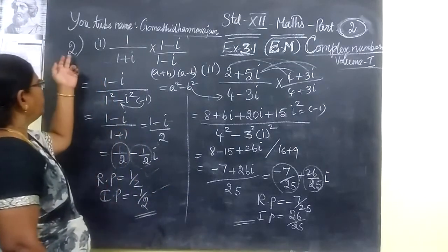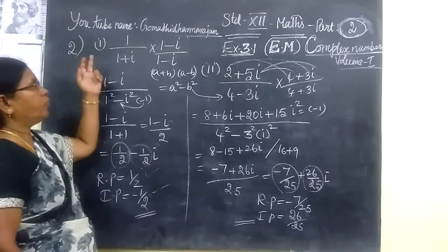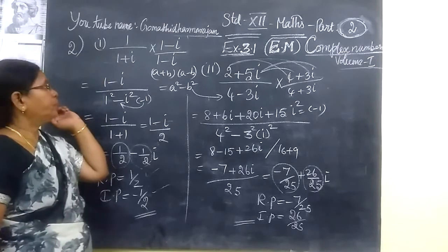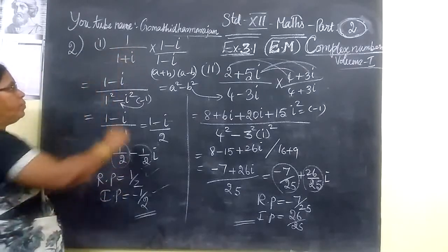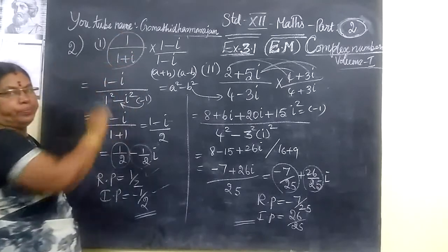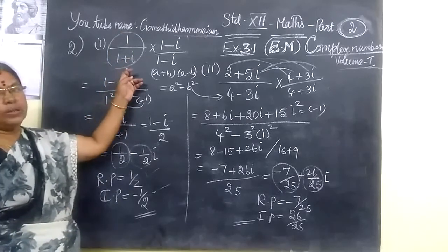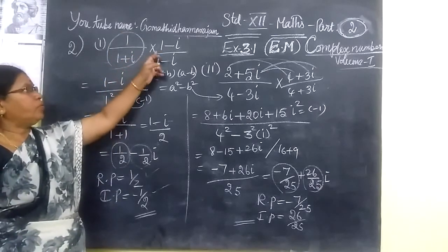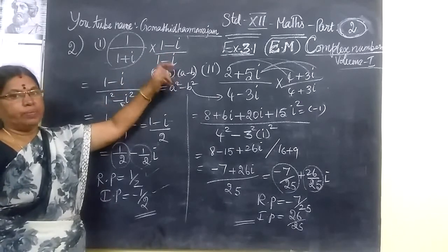Part two — the second problem, question 1 and 2. The question is 1 plus 1 divided by 1 plus i. So you are taking the conjugate. That means 1 minus i by 1 minus i.